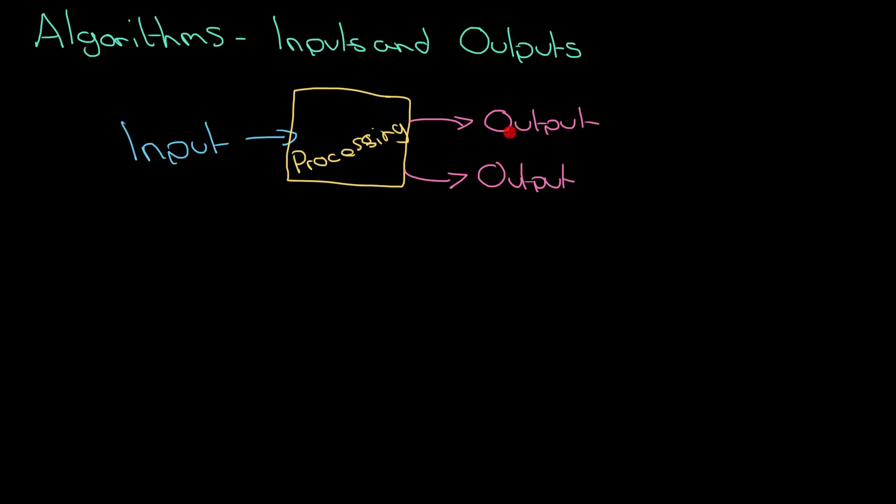You could end up with different outputs depending on what your input is. And kind of an example of that, what I mean by that, imagine you're playing a computer game and you press the left key. You want your character to move left. You don't want it to move right. So that's one output.